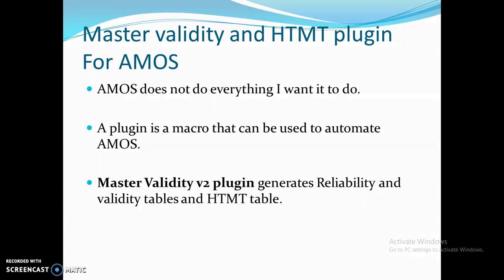As you know, AMOS does not do everything automatically, so we have to do certain calculations while generating these values. A plugin is a macro that can be used to automate AMOS — it is an easy solution that will generate certain tables accurately and quickly, saving your time. The Master Validity version 2 plugin generates reliability and validity tables as well as an HTMT table.